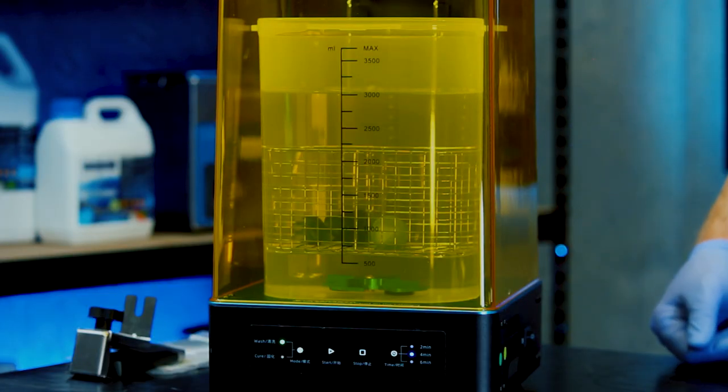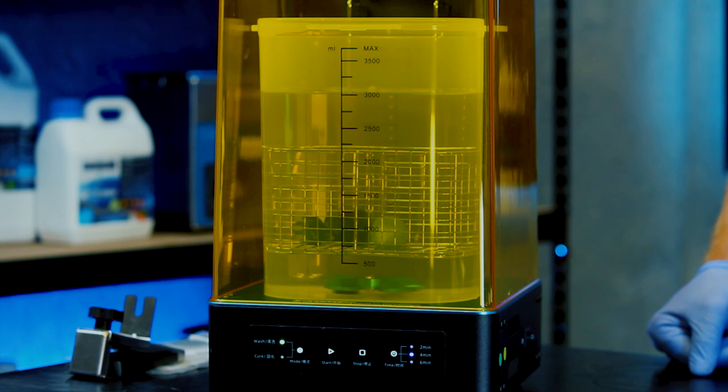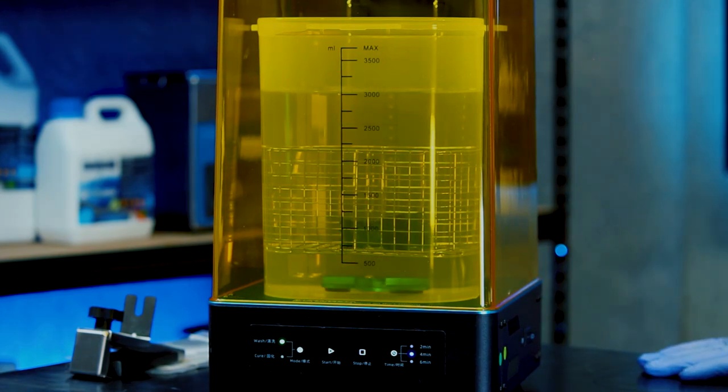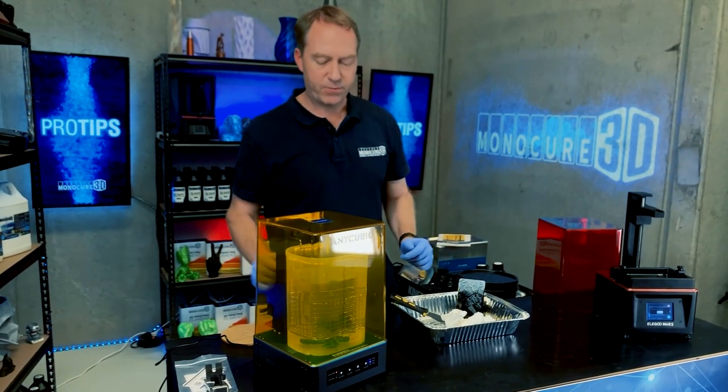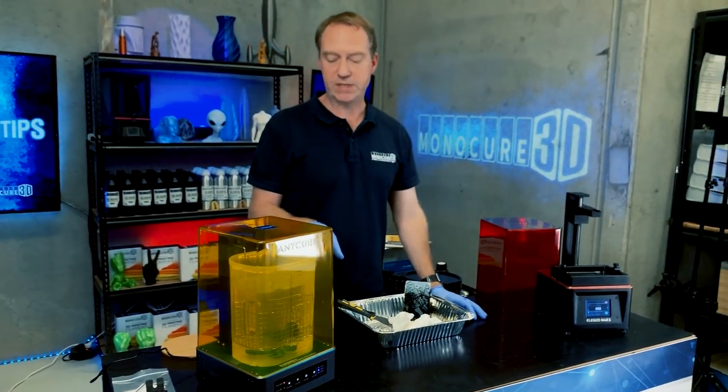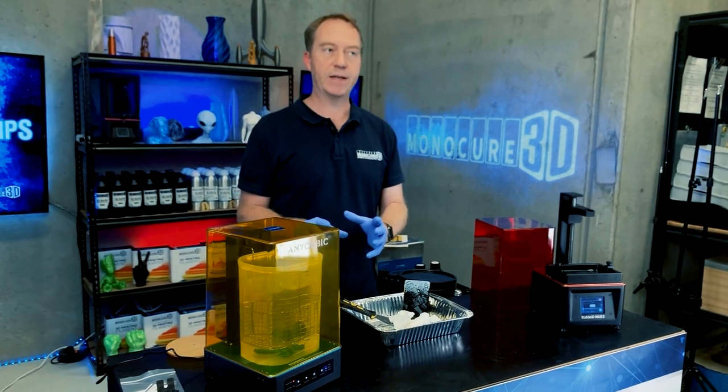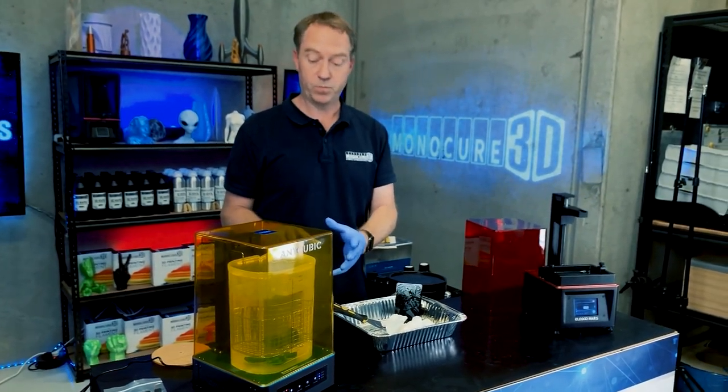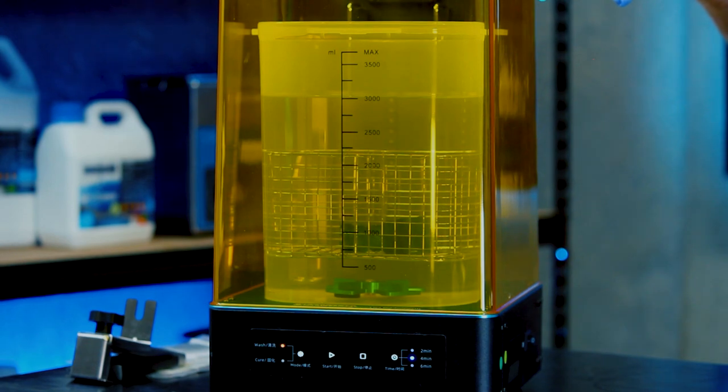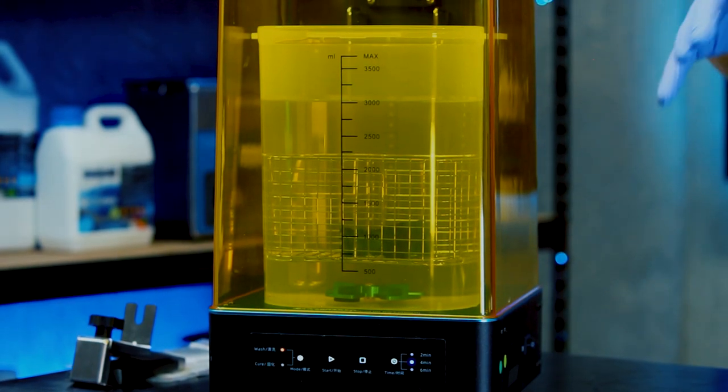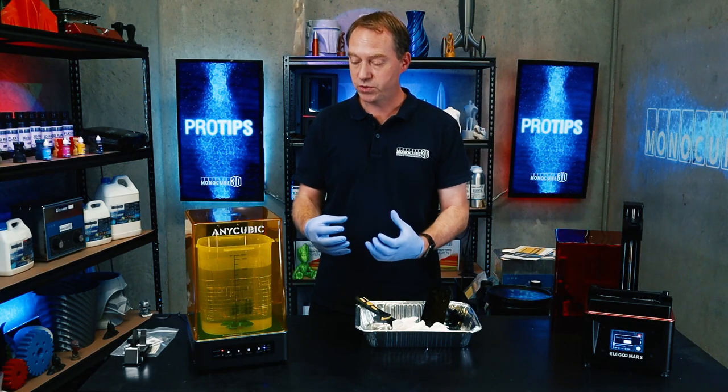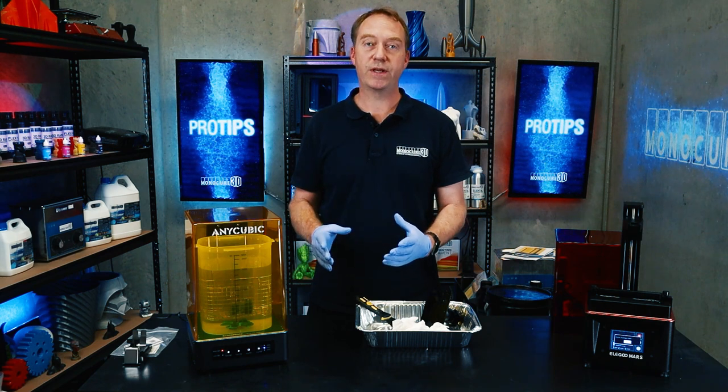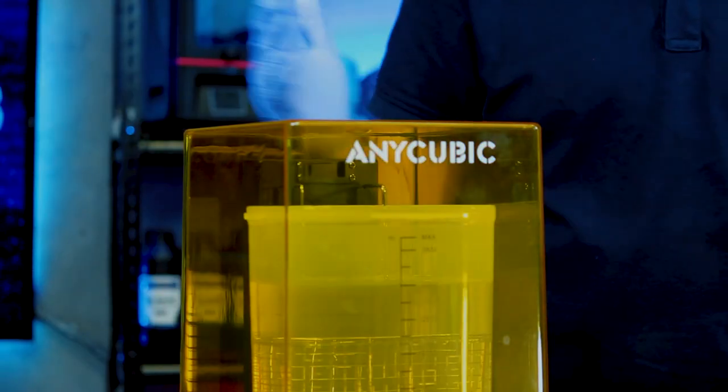The great thing about this is that it goes one way for half the time and then it stops and goes the other way. And I think that's a really nice feature. Okay, so there you go. It's now finishing its wash. I think four minutes is a relatively good time for something like this. Obviously, it would really depend on what you were washing. If it was a much larger piece with a lot of supports and crevices and corners and nooks where the resin could get caught, then of course you need to make sure that you do it for longer.